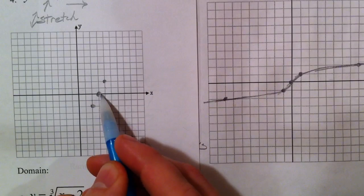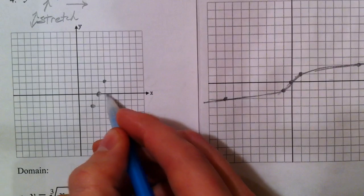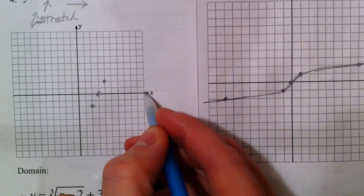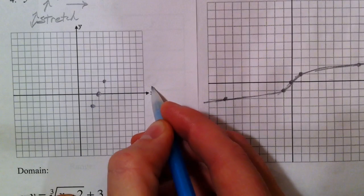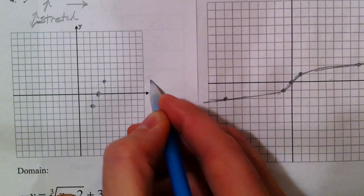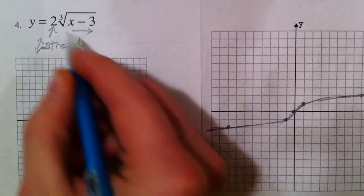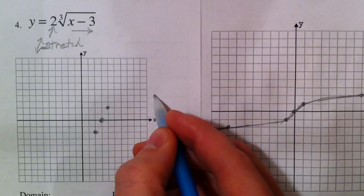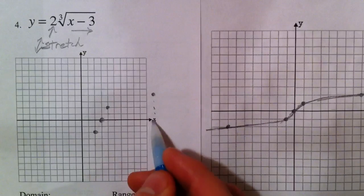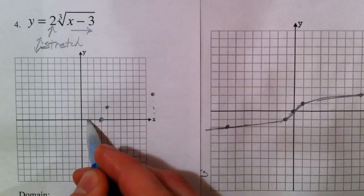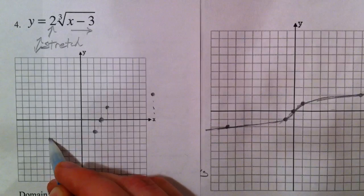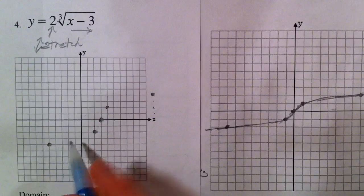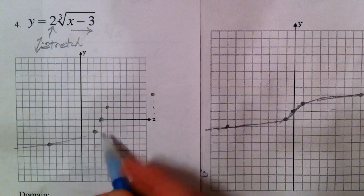Going eight to the right — because we're dealing with cube roots and the cube root of eight is two — but we're multiplying by the two, so we go up four. Then the same thing in the opposite direction: eight to the left, and down four. And there's our graph.